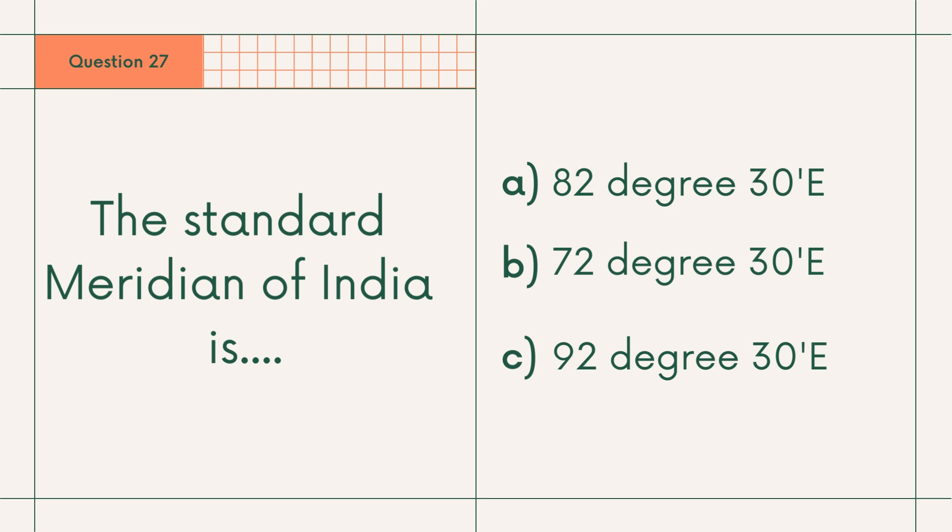Question 27: The standard meridian of India is A. 82 degree 30 east, B. 72 degree 30 east, or C. 92 degree 30 east. Answer: A. 82 degree 30 east.